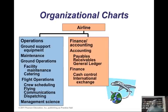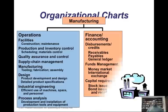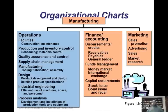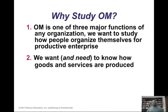In different types of industries — in the airline industry, for instance — ground support, equipment maintenance, ground operations, facility maintenance, catering, flight operations, crew scheduling, gating of flights — all of those things are part of operations.